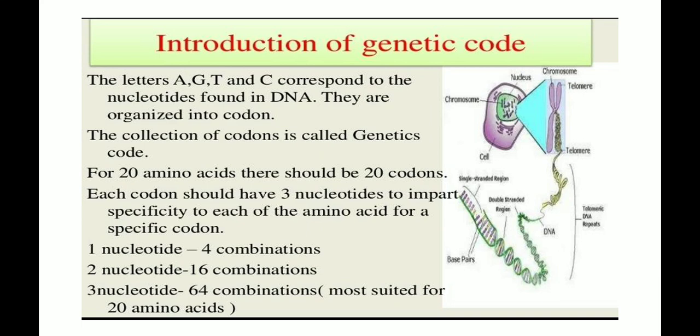For 20 amino acids, there should be codons. Each codon should have three nucleotides — three letters to impart specificity to each amino acid. So 1 nucleotide gives 4 combinations, 2 nucleotides give 16 combinations, and 3 nucleotides give 64 combinations. The total combination is 64 codons for 20 amino acids.